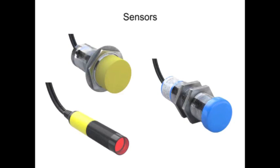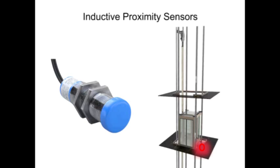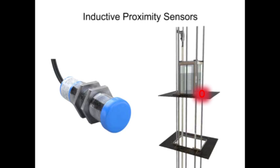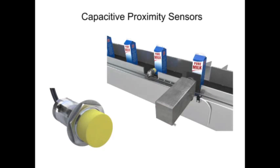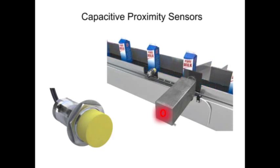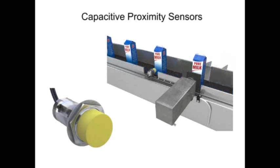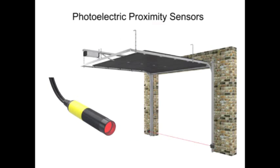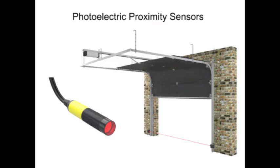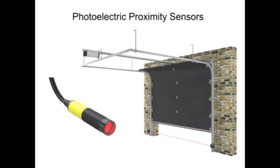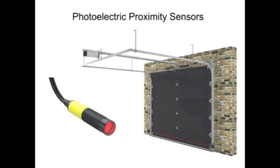Sensors of various types help us in everything we do and consume. Inductive proximity sensors are used in elevators, for example. Capacitive proximity sensors are used to detect liquids and other bioelectric materials on the manufacturing floor. And photoelectric sensors are used in our homes and in countless other applications. Let's take a closer look at how these three common types of sensors work.